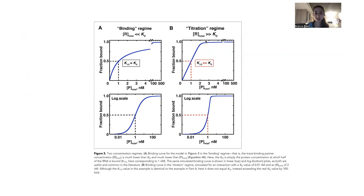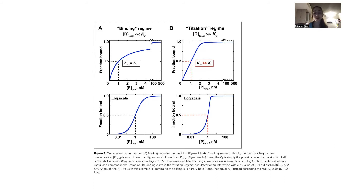Another nuance is that sometimes the total amount is not actually the amount that's functional, which can be another complication. This is an extreme case, and the data you get is basically useless when you're in this titration regime. Titration — you might have done an acid-base titration in Gen Chem — where you're increasing the amount of the other until it gets to a point. What you're really finding is the amount of functional protein. There's basically no hope in finding that Kd, because you're just measuring the concentration of the active component.